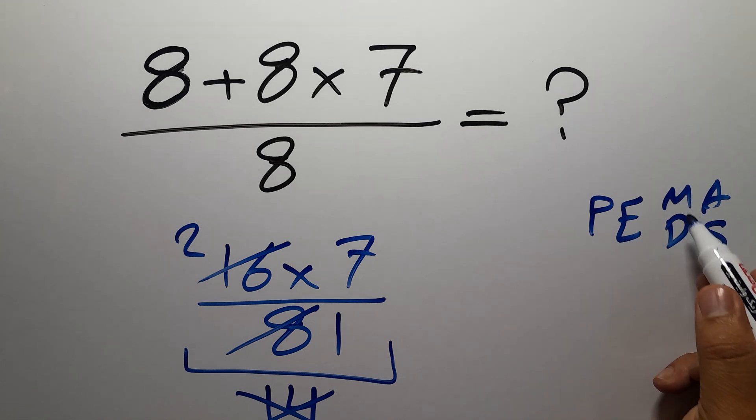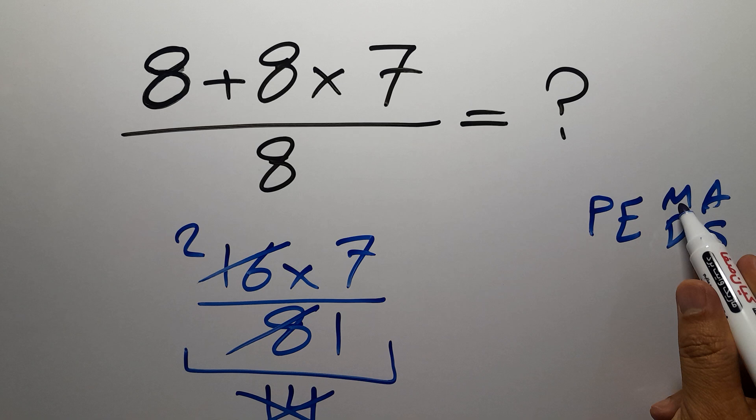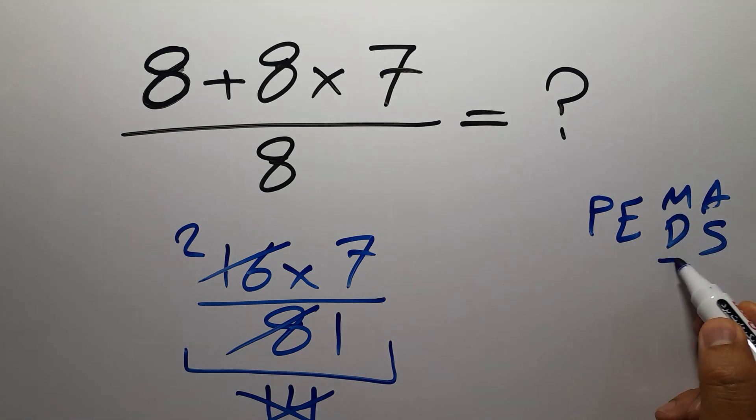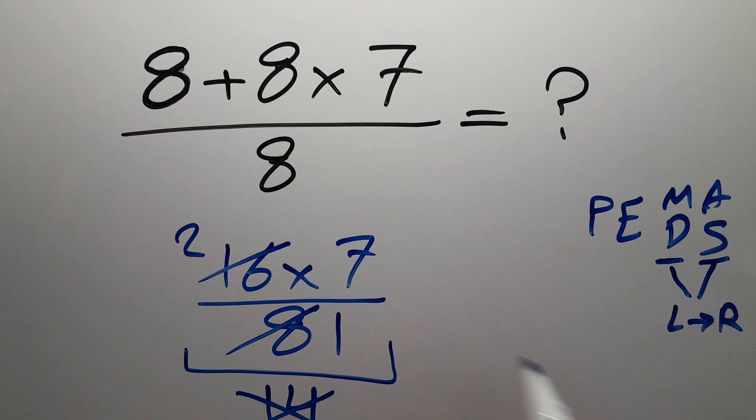exponents, then multiplication or division, and finally addition or subtraction. Remember that multiplication and division have equal priority and we have to work from left to right. The same applies to addition and subtraction, so left to right. Here